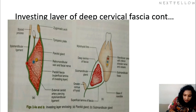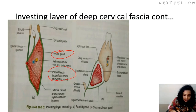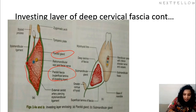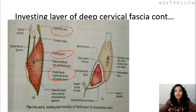Here we can see the parotid gland, which is covered by the superficial lamina of the deep cervical fascia, and on the deeper aspect this is the deeper lamina. The superficial lamina attaches superiorly to the zygomatic arch as parotidmasseteric fascia. It is very thick and tough — called the parotidmasseteric fascia — which does not allow the parotid gland to swell if there is any abscess.